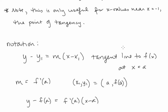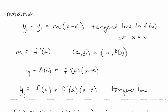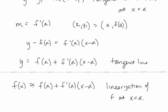Let's look at the general notation. Starting with the equation of a line y minus y1 equals m times x minus x1, for a tangent line to f of x at x equals a, the slope m is f prime of a, and the point x1, y1 is a comma f of a. Plugging that in and adding f of a to both sides gives us y equals f of a plus f prime of a times x minus a. When we write f of x is approximately equal to f of a plus f prime of a times x minus a, this is the local linearization of f at x equals a.